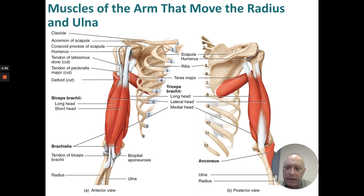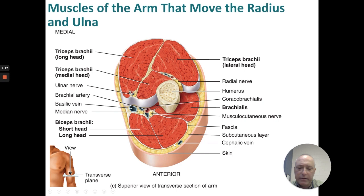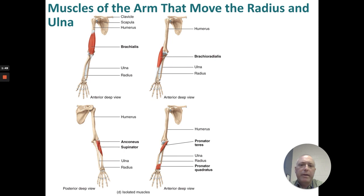Muscles that move the radius and the ulna: biceps brachii, brachialis, triceps brachii, and anconeus. Looking at a transverse section of the arm, we can see the different compartments: the triceps brachii with its long head, medial head, and lateral head; the brachialis; and the biceps brachii with its short head and long head. Additional muscles moving the radius and ulna include: brachioradialis, anconeus, supinator, pronator teres, and pronator quadratus.